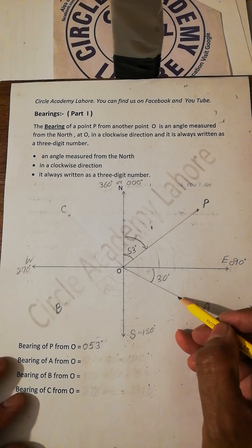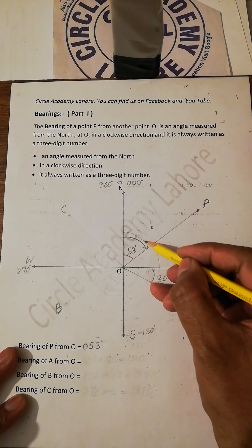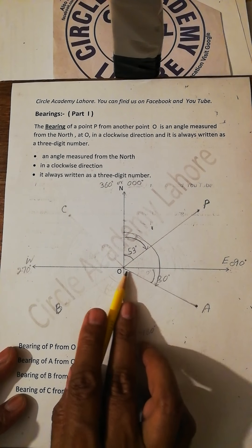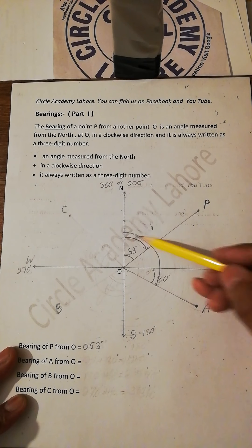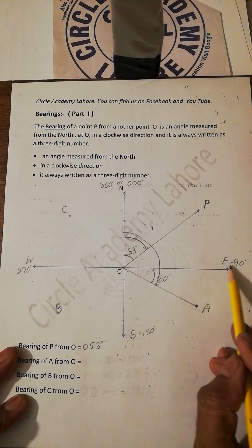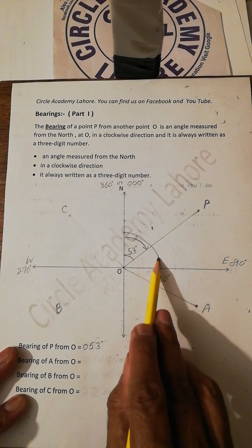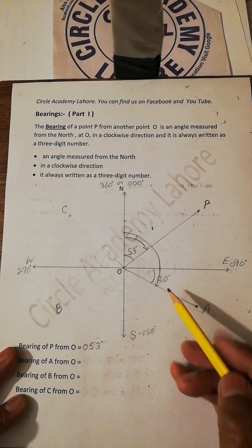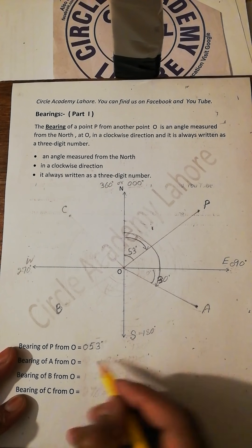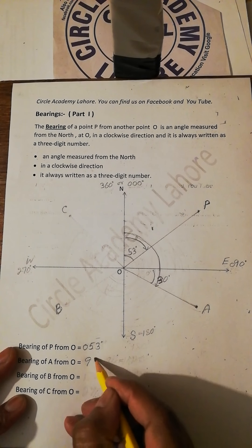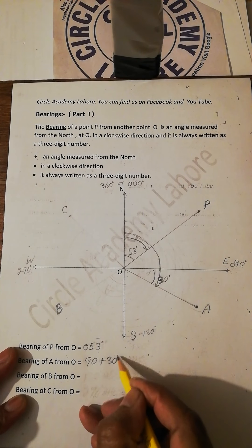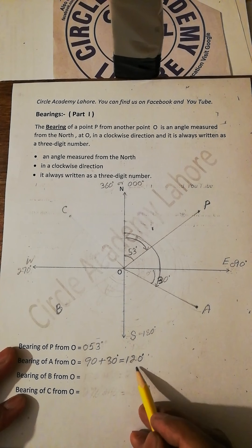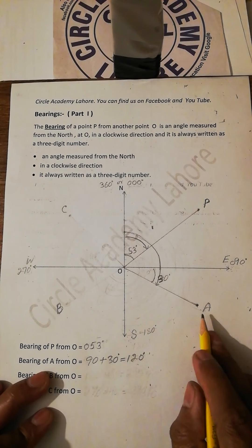We have to find out the bearing of A from O. We take the complete rotation starting from north till the line joining O and A. The bearing of east from north is 90 degrees, and in addition to 90 we add this 30 degrees. So 90 plus 30 equals 120 degrees. This is the bearing of A from O.